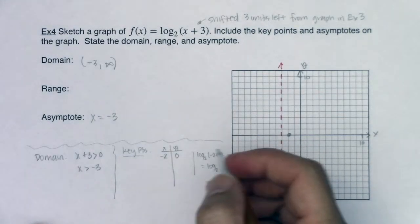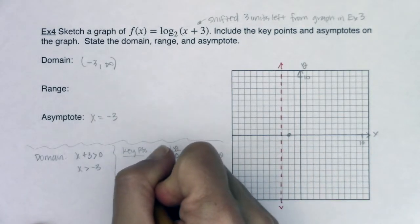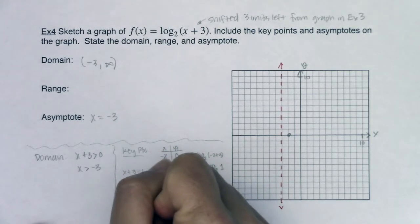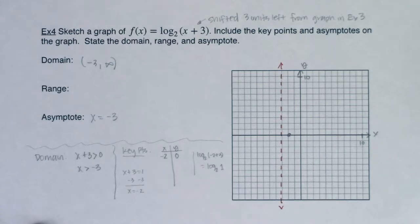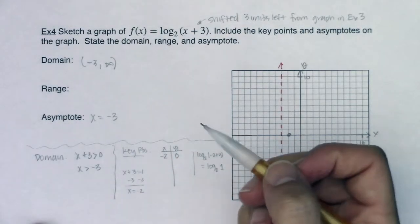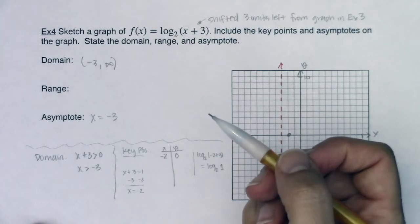And again, if I wanted to algebraically do that, I would let my argument be equal to 1. I would subtract 3 from both sides and I would get x is equal to negative 2. So there's an algebraic way of going about it. It's always a good idea to set your argument equal to 1. That's where your x-intercepts live.